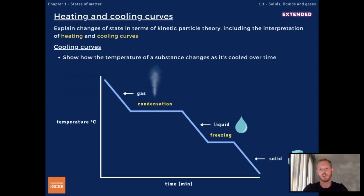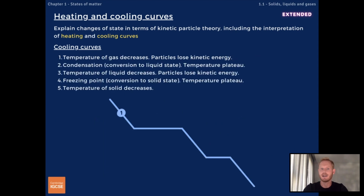A cooling curve shows how the temperature and state of a substance changes as it's cooled over time — basically the opposite of a heating curve. This time we start with water vapor above 100 degrees. Temperature gradually decreases as the gas is cooled until it reaches the boiling point. At the boiling point, the water vapor condenses. The line is horizontal, showing that the temperature doesn't change until all the vapor has turned into water. Particles stop losing energy as forces of attraction between them form.